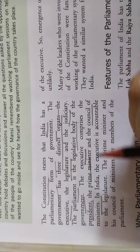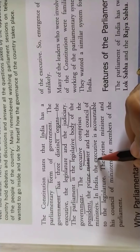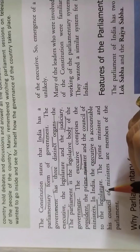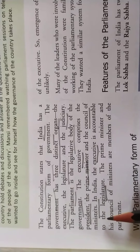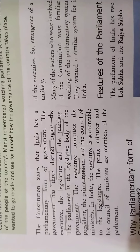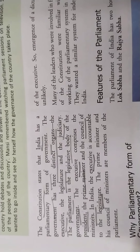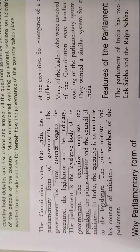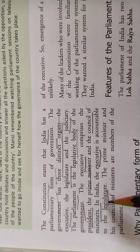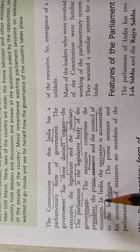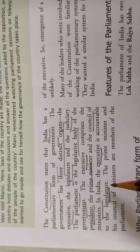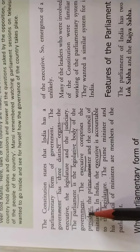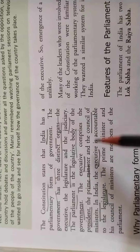In India, the executive is accountable to the legislature. The president, the prime minister, and the council of ministers have to answer to the legislature — meaning Lok Sabha and Rajya Sabha, the two most important houses — if they are doing any illegal activities or want to implement or bring new laws in our country.